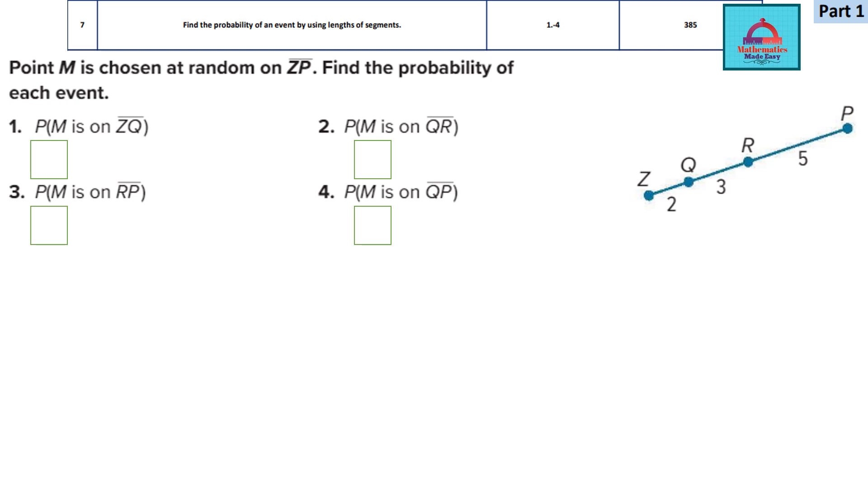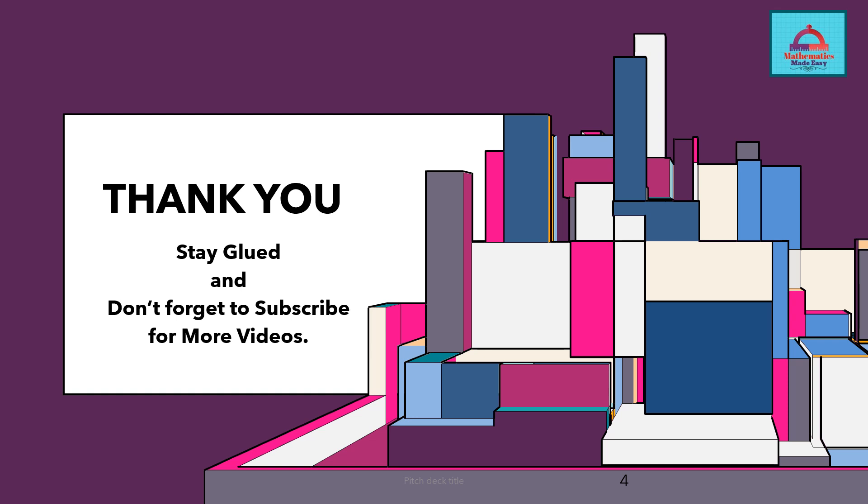Now check your final answer. For question 1 the answer is 1 by 5. For question 2 the answer is 3 by 10. For question 3 the answer is 1 by 2. And for question 4 the answer is 4 by 5. So this is how you get the final answers. I hope you've understood this slide on learning objective 7 and lesson of geometric probability. That brings us to the end of today's session.